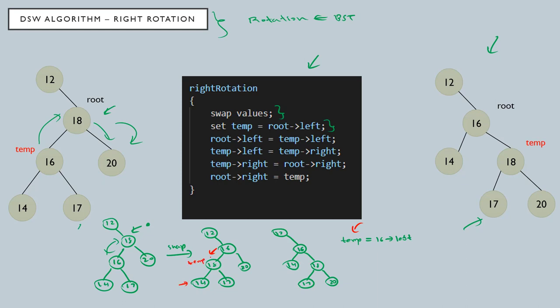If I make root left point to temp, then the left item of 16 will be 14. Then temp left will be equal to temp right. Now the temp is basically the root left pointer — the 16 left pointer — so it will be pointed to the right side, meaning 18 will be pointed to the right side. Then temp right will be equal to root right, which is 20. Finally, root right will be the temporary, which we attach to the right side.